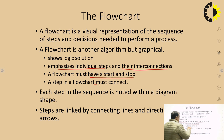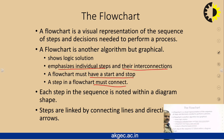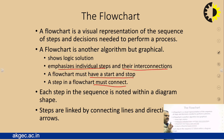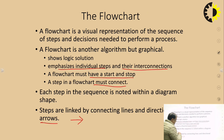Every step in a flowchart must be connected. There should not be any version of a flowchart where components are not connected with one another. Each step in the sequence is noted within the diagram using a particular shape meant for that kind of process, and every step is connected with directional arrows showing control flow from one point to the next.